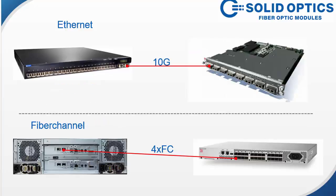First of all, what is a protocol? The easiest way to describe it is that it's like a language that two devices use to talk to each other. In the case of Ethernet, this Juniper switch and this Cisco card have decided to talk 10-gig Ethernet with each other, and they both understand that language. The same goes for Fiber Channel — this is an example of a Brocade switch talking to a SAN server with 4x Fiber Channel, so that's another language.